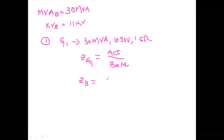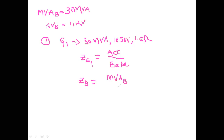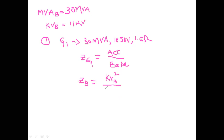Z_base can be obtained from the formula: Z_base = KV_base² / MVA_base. This is the formula used to determine the base value of impedance for any component when the actual value is given. However, if a per-unit value had been given instead of an actual ohm value, you would use the conversion formula: Z_pu_new = Z_pu_old × (KV_base_old / KV_base_new)² × (MVA_base_new / MVA_base_old).